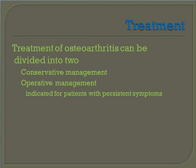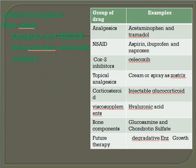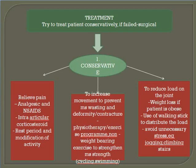Treatment of osteoarthritis can be divided into two: conservative treatment management and operative management, indicated for patients with persistent symptoms. Pharmacological pain relief includes analgesics, NSAIDs, and intra-articular corticosteroid injections. The approach is to try conservative treatment first; if it fails, proceed to surgical management.